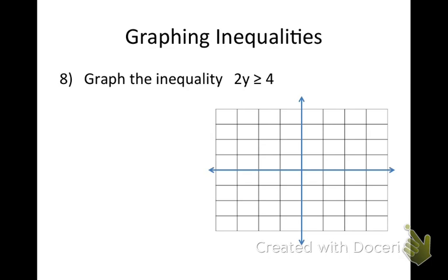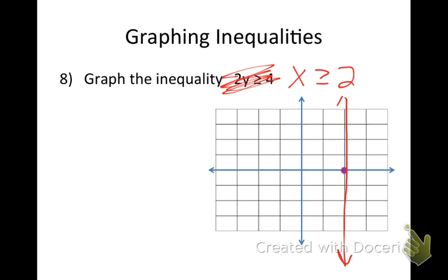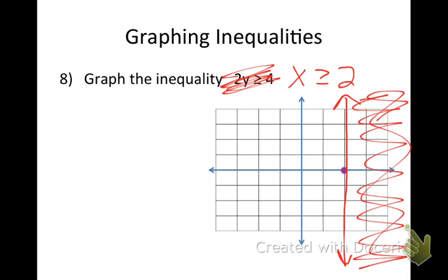Last one — I'm going to change this problem to x is greater than or equal to 2. If y is greater than or equal to 2 that's a horizontal line, but x is greater than or equal to 2 gives a vertical line. There's no above or below, so where is greater than? It's to the right, because those are the more positive, larger numbers. When you have no y, it's always a vertical line, and greater than means shade to the right.